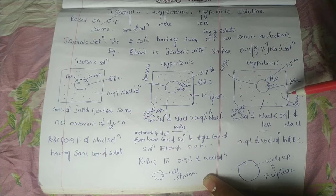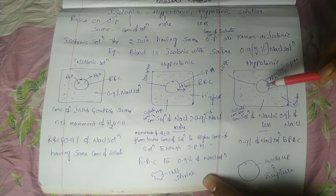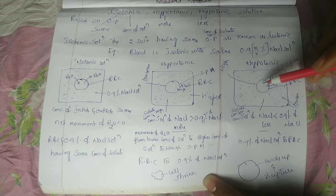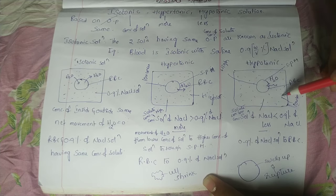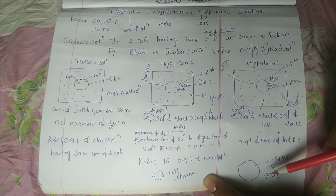0.9 percentage of NaCl solution ninchi RBC cell lo ki movement jarukindi. Dini valla water molecules RBC lo khella hai kada. Dini valla cell ane dhi - RBC cell ane dhi swells up avutundi.